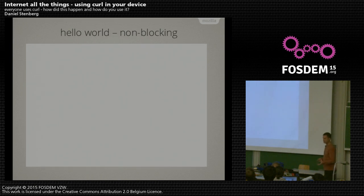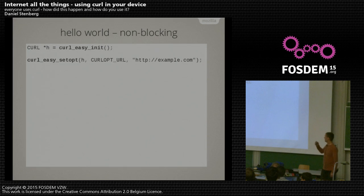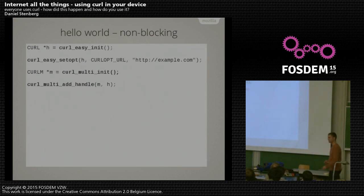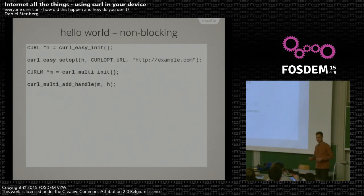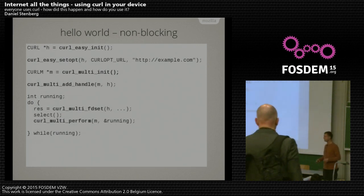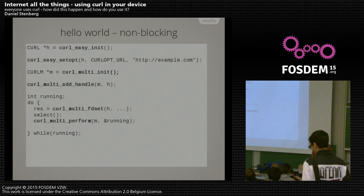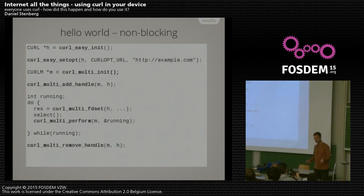To do this non-blocking, it's basically the same thing. You create an easy handle — that's a single transfer — set some options, set the URL. Then you create a multi-handle, which holds many transfers, and add your single transfer to it. You can do this any number of times for any number of simultaneous transfers. Users have done up to 50k parallel transfers — it usually gets messy near the 16-bit boundary but you can work around it. Then you run all those transfers simultaneously in a select loop or whatever, remove the handle from the multi-handle, and close everything down.